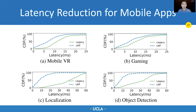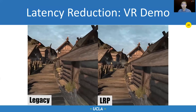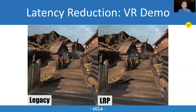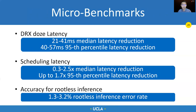Here is a demo of mobile VR with and without LRP. When you run mobile VR in the legacy LTE, the motion-to-frame latency is large, so when you make head movements, the video frames are lagging. With LRP enabled, the experience is much better as this latency is reduced. We also show that LRP can eliminate DRX-doze latency, reduce scheduling latency, and has high accuracy for rootless inference in the macro benchmarks.